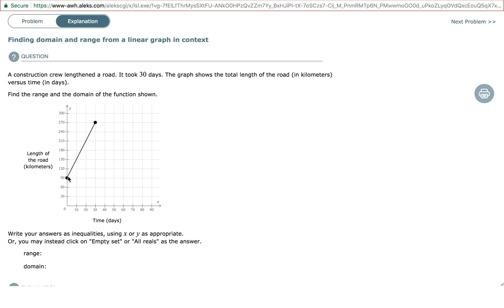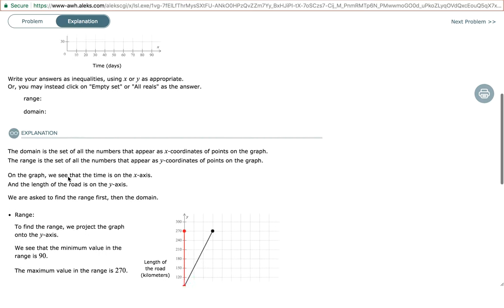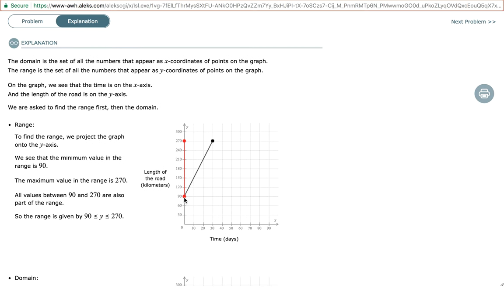So now, let's determine both domain and range by focusing first on the range. So the range has a low value of 90 and a high value of 270. So we would write 90 is less than or equal to y less than or equal to 270. This is the range.